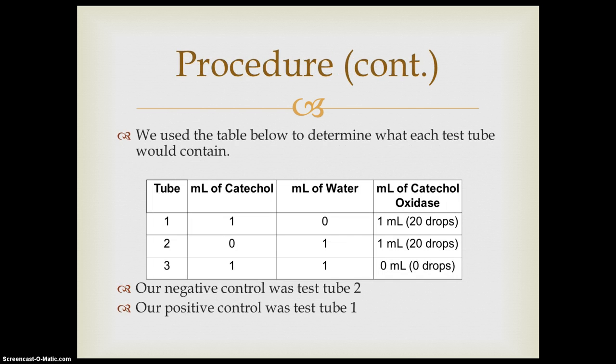Procedure continued. We used the table below to determine what each test tube would contain. Tube one would have one milliliter catechol and no milliliter water, and one milliliter of catechol oxidase. Test tube two would have no catechol, one milliliter of water, and one milliliter of catechol oxidase.